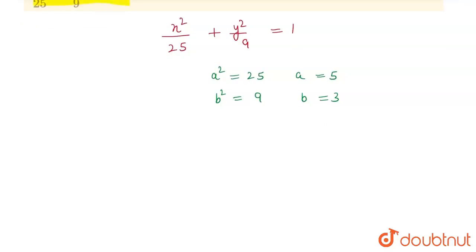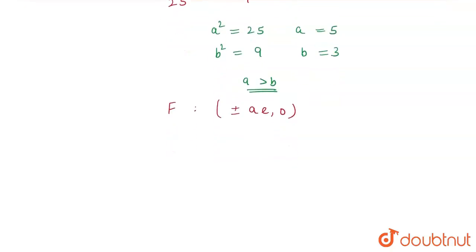Here I can clearly see that a is greater than b, and for such an ellipse where a is greater than b, the coordinates of the foci lie on the points (±ae, 0). For this, I need to find the value of eccentricity.